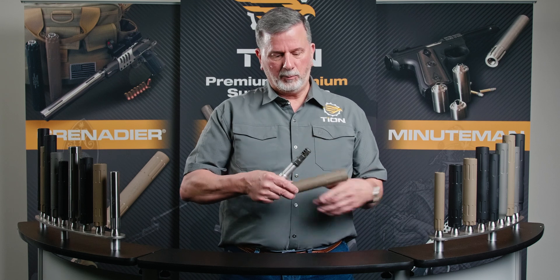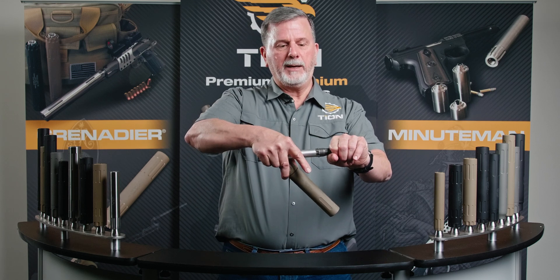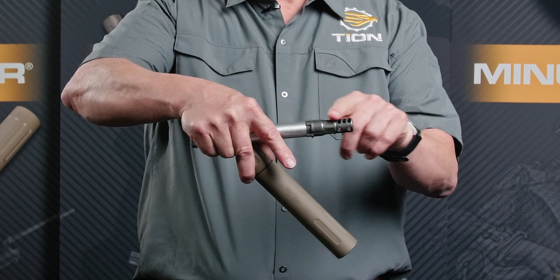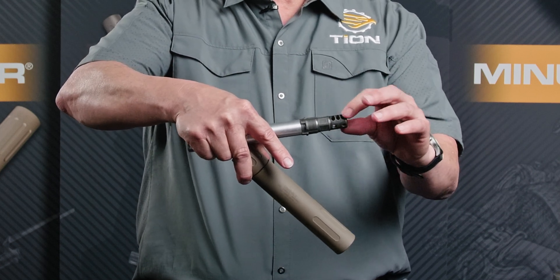Now this mount can be what we described as a mount. It doesn't have a muzzle brake or a flash hider on it. Then we have muzzle brake versions and we have flash hider versions.